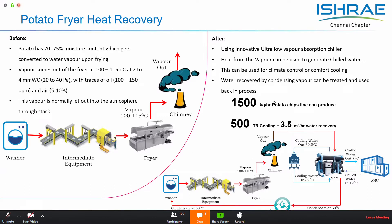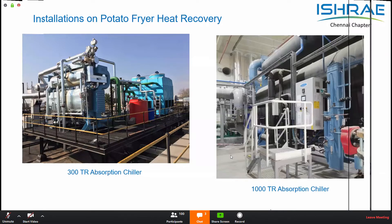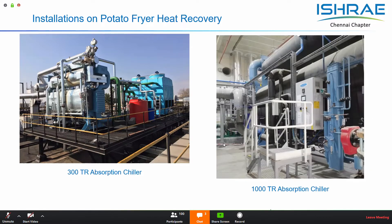This process also generates distilled water, which can be used as makeup water for cleaning potatoes or for cooling towers, making it a very sustainable solution. It helps reduce the carbon footprint and enables a zero-discharge kind of application. To give a brief illustration: for 1,500 kg of chips produced, the potential of recovery is nearly 500 tons of cooling and 3.5 cubic meters per hour of water — a huge saving for the industry. Such installations have been operational for many years and are available in various capacities in heat recovery applications.